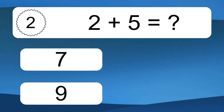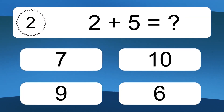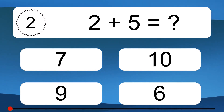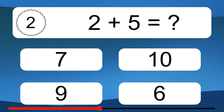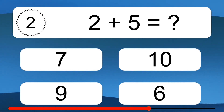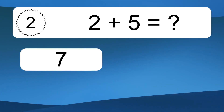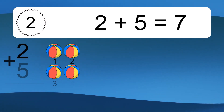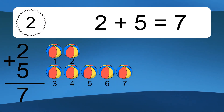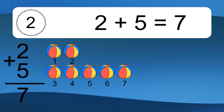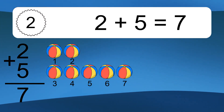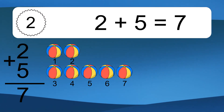2 plus 5 equals what? 2 plus 5 equals 7. Let's count it. 1, 2, 3, 4, 5, 6, 7.